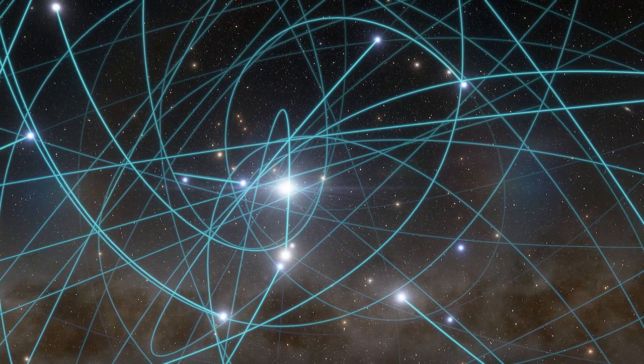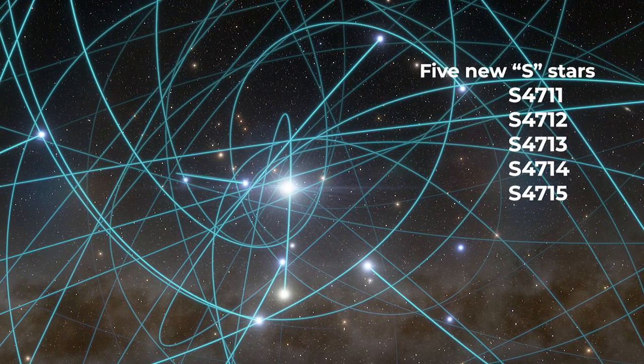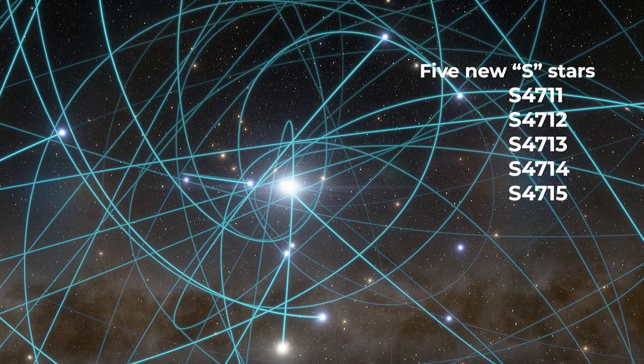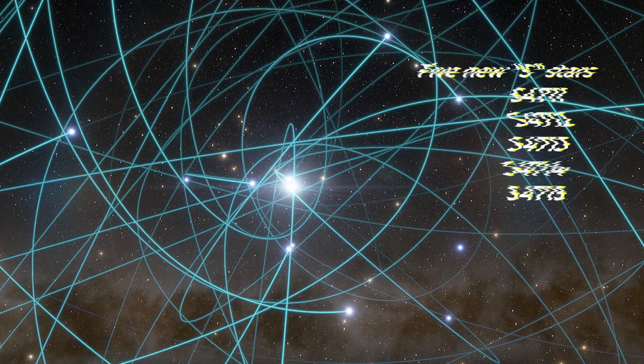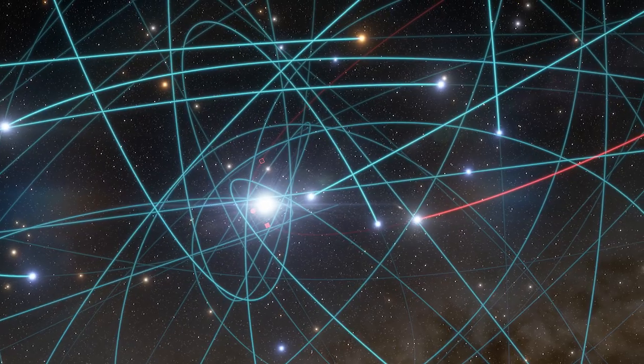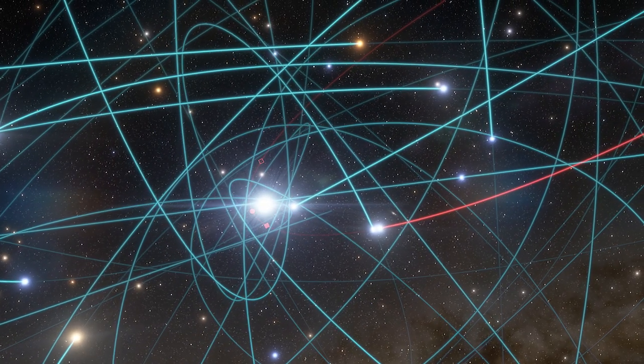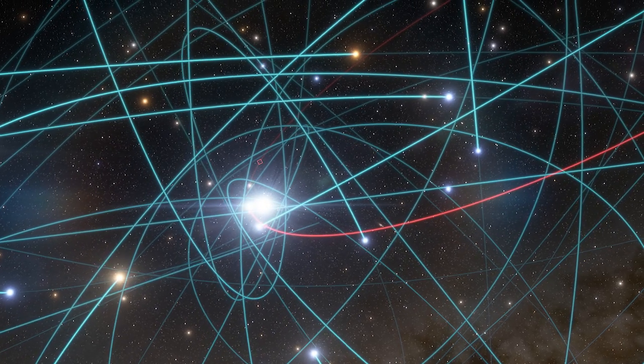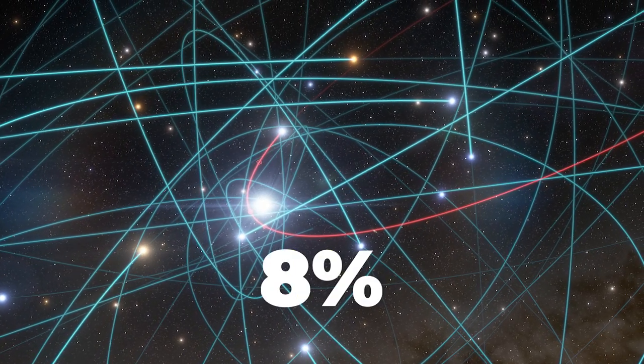But last year, the same team discovered five new S-stars, or stars that travel in long elliptical orbits around Sagittarius A, that are even closer. S4714 was the fastest of the stars, just absolutely cannonballing past Sagittarius A at 8% light speed.